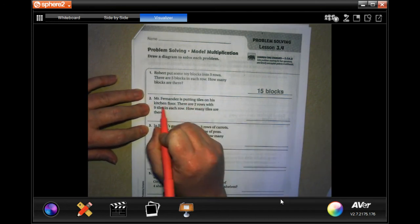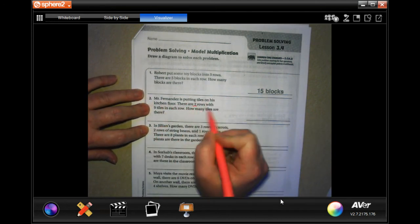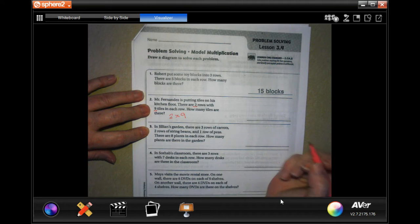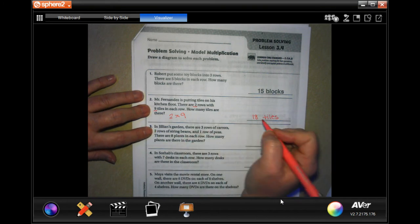Mr. Fernandez is putting tiles on his kitchen floor. There are two rows with nine tiles in each one. How many tiles are there? Two times nine, well, two nines is 18. So 18, and don't forget, we need a word answer. Word problem, word answer.